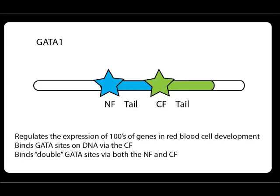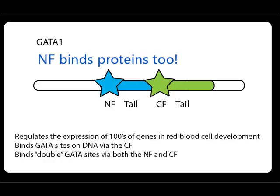A few basics about GATA1: it's a transcription factor that's very important for red blood cell development. It binds to GATA sites on DNA, predominantly via the C finger, and it can bind double GATA sites using both the N finger and the C finger, which in this presentation are colored blue and green, respectively. Note that each of these fingers has a tail region, which also comes into the story.